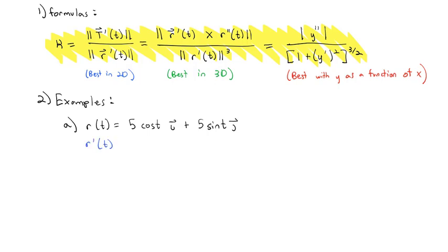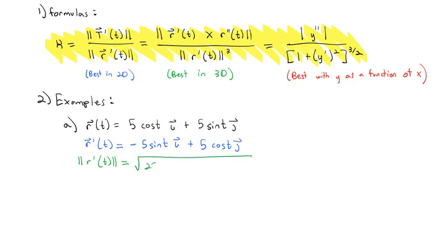Probably easier to start finding all the pieces and then dividing at the end. First, the derivative of the vector-valued function r(t) is -5sin(t)i + 5cos(t)j. For the denominator, we need the magnitude of this derivative: the square root of 25sin²(t) + 25cos²(t). Factoring out the 25, we get the square root of 25 times (sin²(t) + cos²(t)). Since sin² + cos² = 1, this is just the square root of 25, or 5.